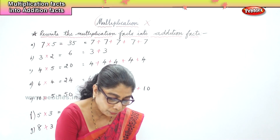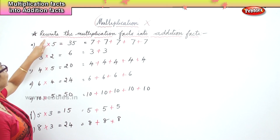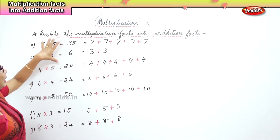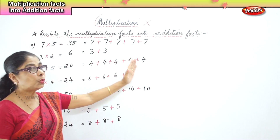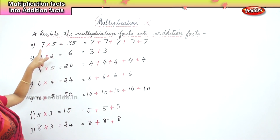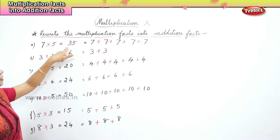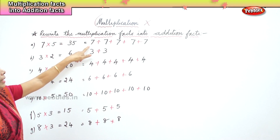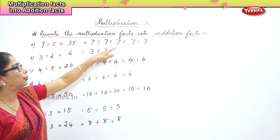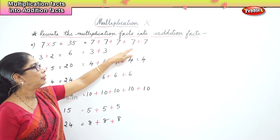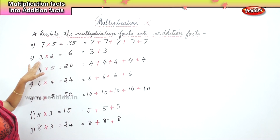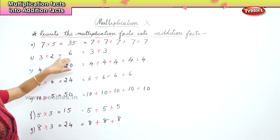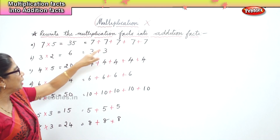Now, what did we learn today? Rewrite the multiplication fact into addition facts. Seven fives are thirty-five — how many times? Seven, one, two, three, four, five — addition fact. Three twos are six, that is three two times.